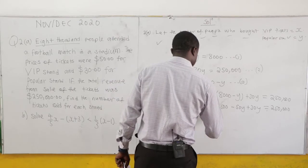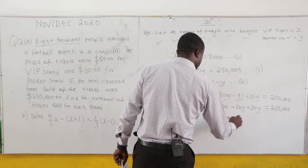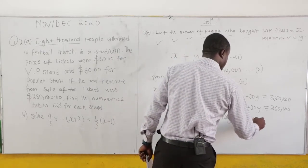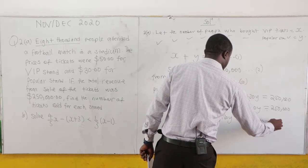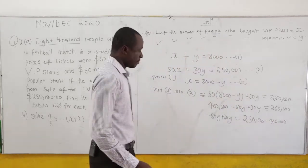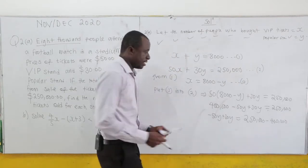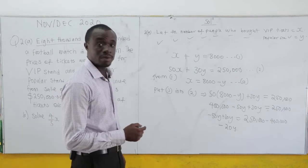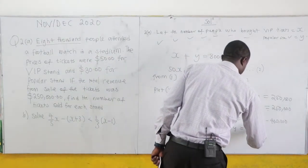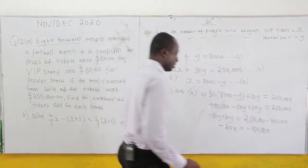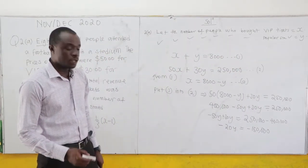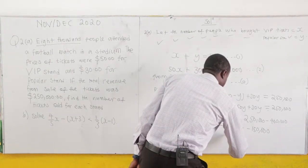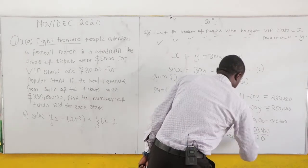Now we simplify. We have 400,000 minus 50Y plus 30Y equals 250,000. Combining the Y terms: negative 50Y plus 30Y gives negative 20Y. So we have 400,000 minus 20Y equals 250,000. Moving 400,000 to the right: negative 20Y equals 250,000 minus 400,000, which is negative 150,000. We want to find Y, so we divide both sides by negative 20.